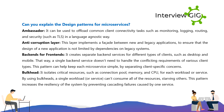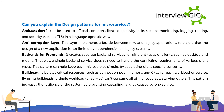Can you explain the design patterns for microservices? Ambassador — can be used to offload common client connectivity tasks such as monitoring, logging, routing, and security such as TLS, in a language-agnostic way. Anti-corruption layer — implements a facade between new and legacy applications to ensure that the design of a new application is not limited by dependencies on legacy systems.